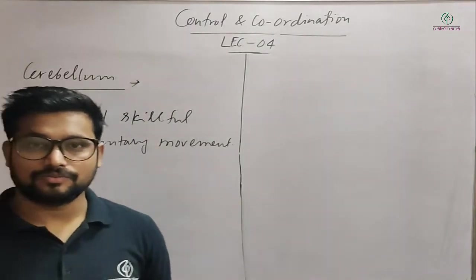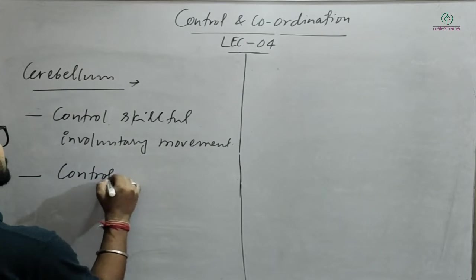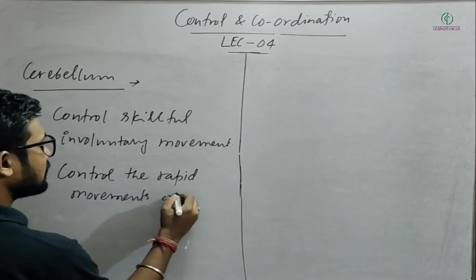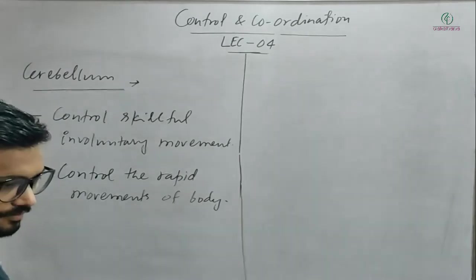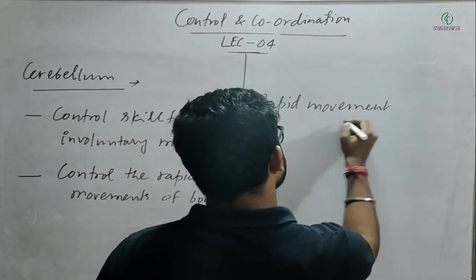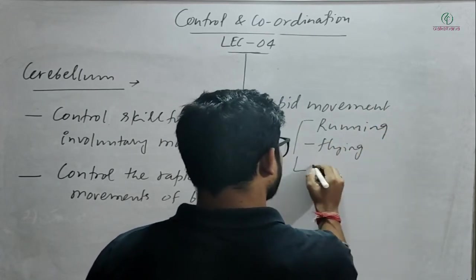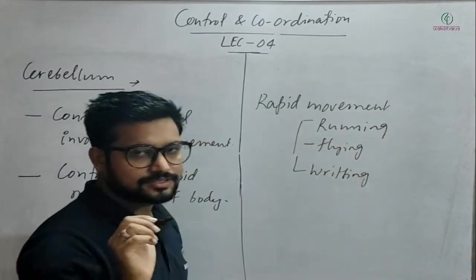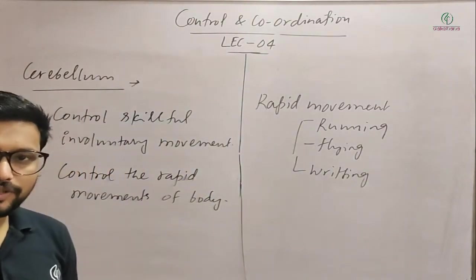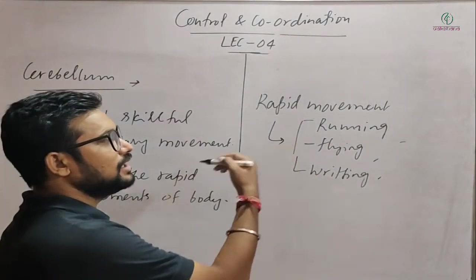Cerebellum also controls rapid movements of the body. For example, running fast, flying, or writing — when you are young and learning to write you are very conscious, but when you have expertise you write fast easily. These fast, skilled, involuntary rapid movements — running, flying — are all controlled by the cerebellum region.